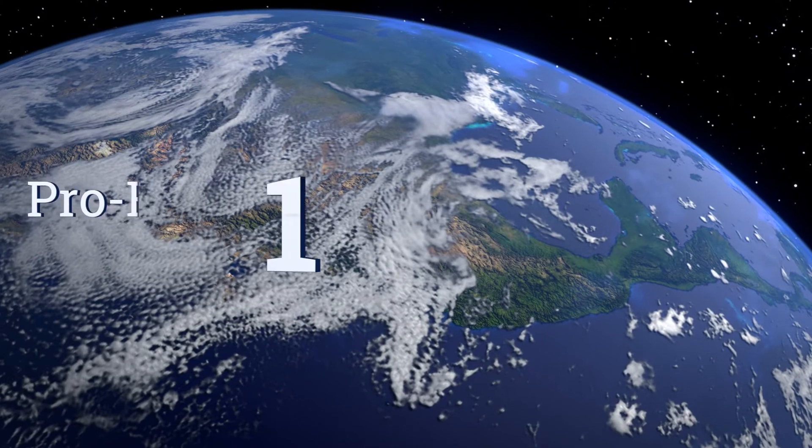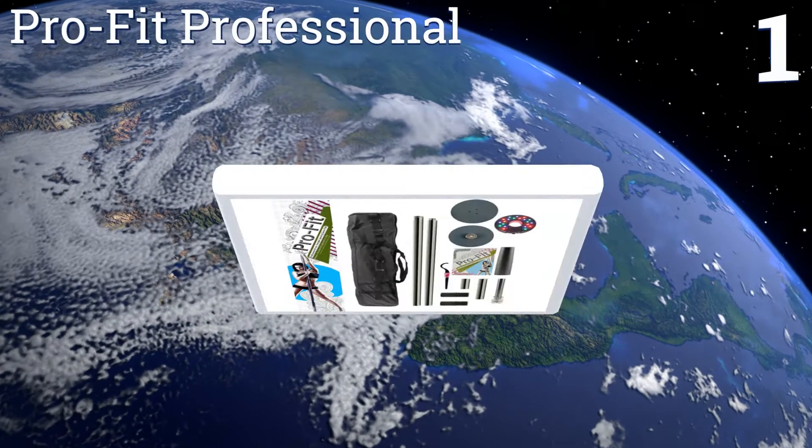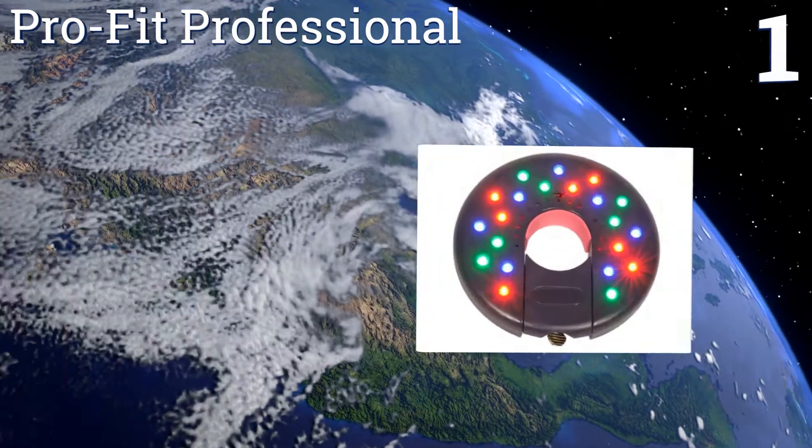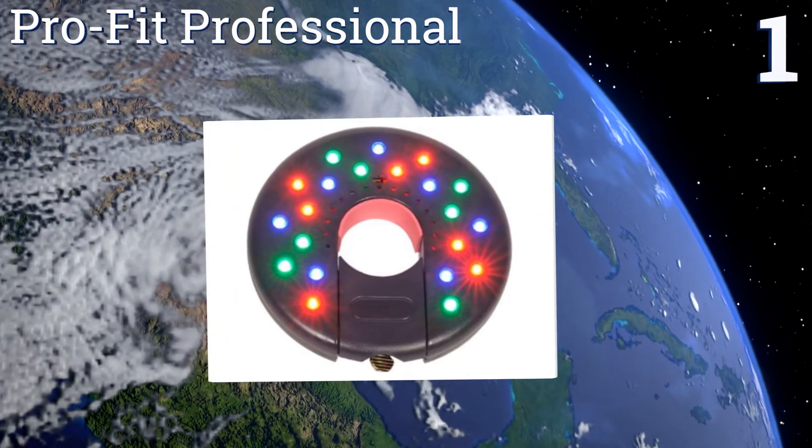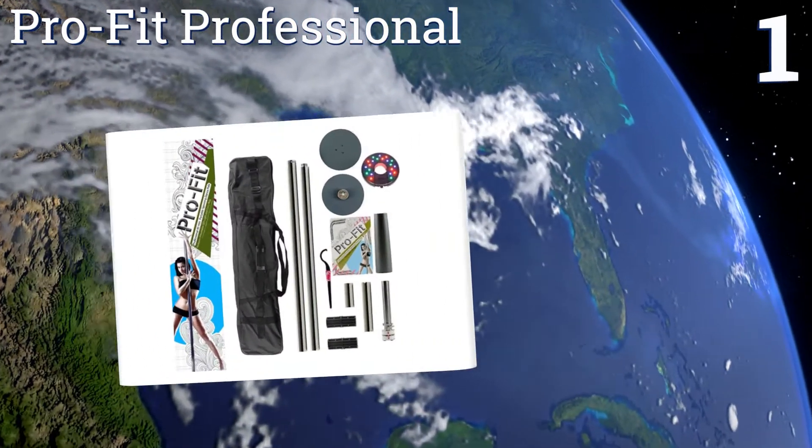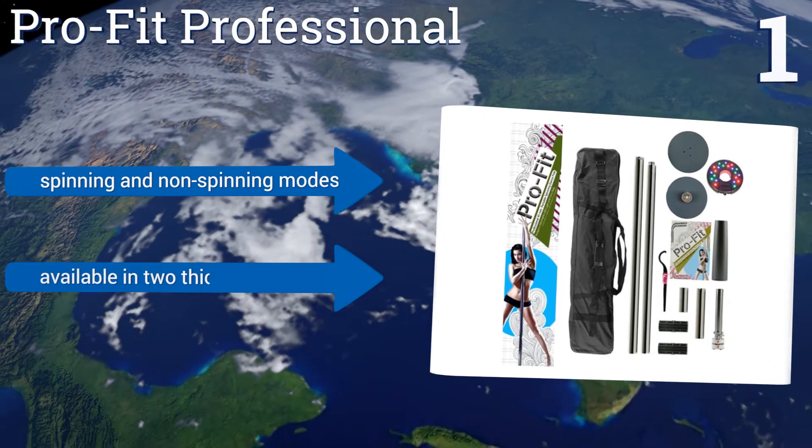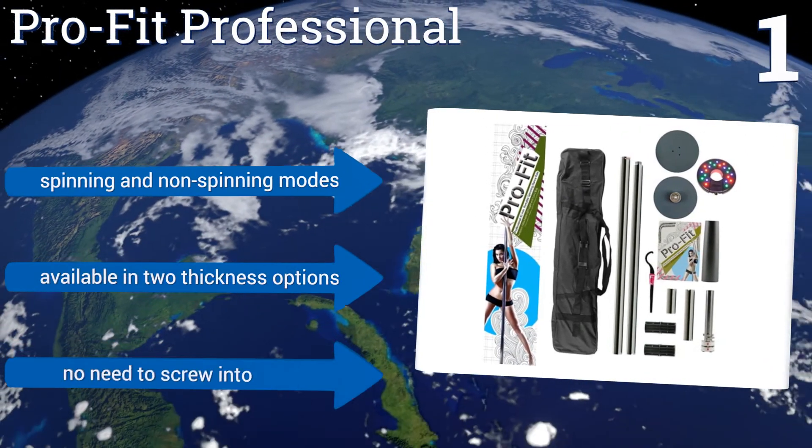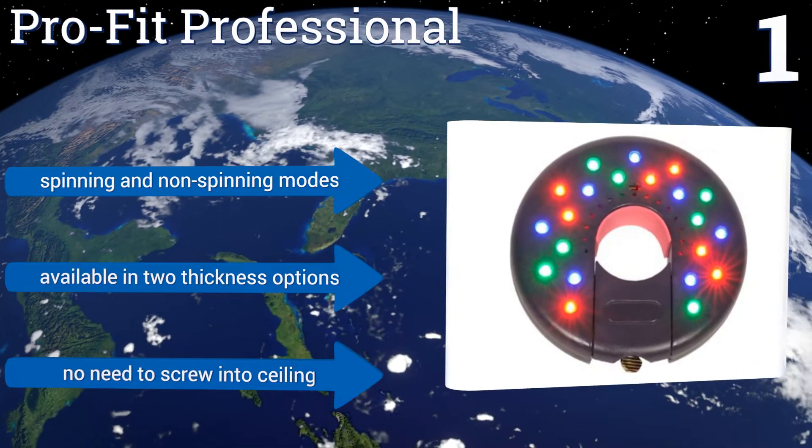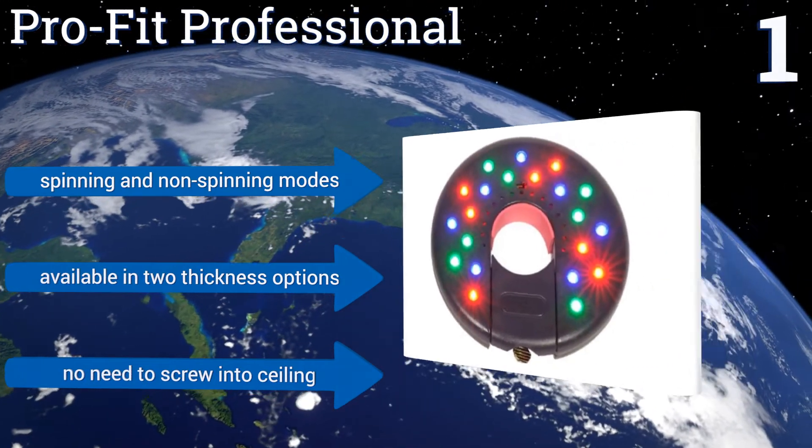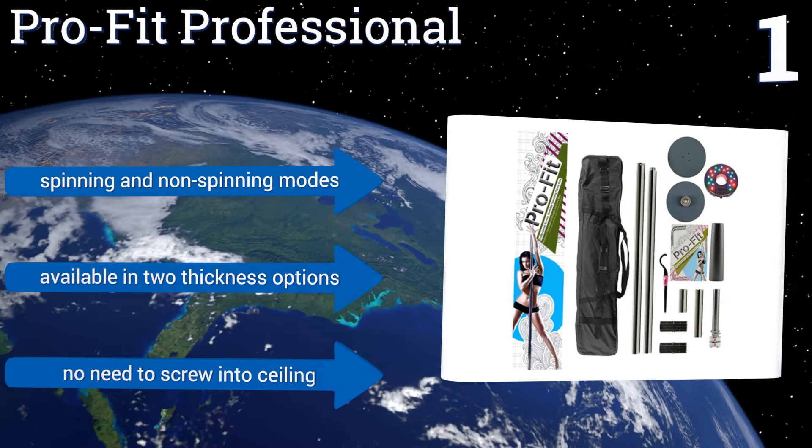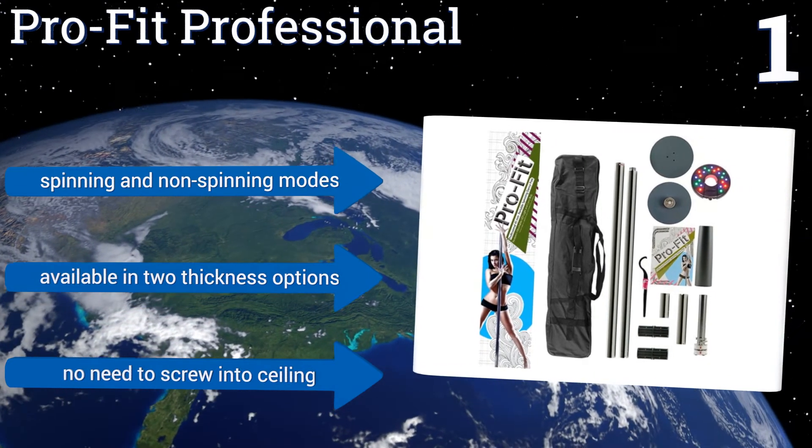Coming in at number one on our list, the Profit Professional can take your performances to the next level. It comes with an easy to attach LED dance light that can be set to constant or dance show if you prefer flashing lights. The entire thing can be installed in minutes without any tools. It features spinning and non-spinning modes and is available in two thickness options. Plus, you don't need to screw it into the ceiling.